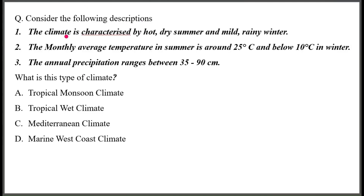Consider the following description: the climate is characterized by hot and dry summers and mild rainy winters. The monthly average temperature in summer is around 25 degrees Celsius and below 10 degrees Celsius in winter. The annual precipitation ranges between 35 to 90 centimetres. This is the Mediterranean climate.